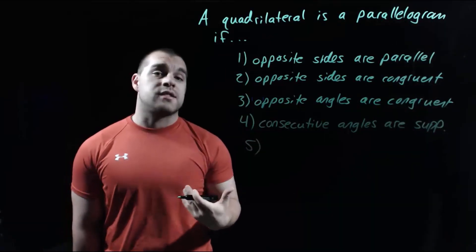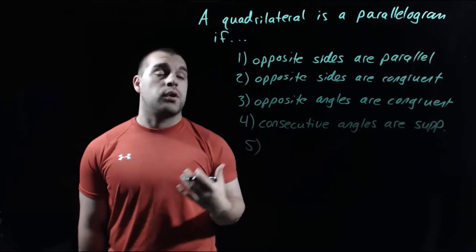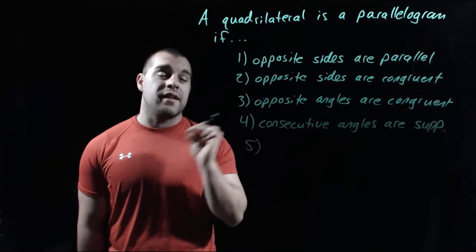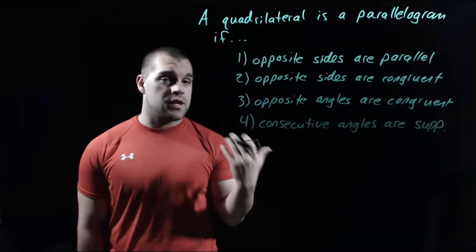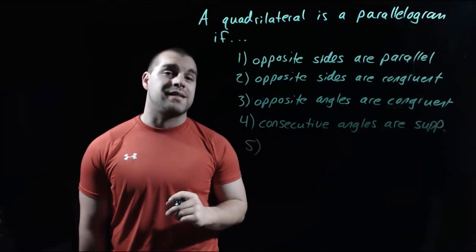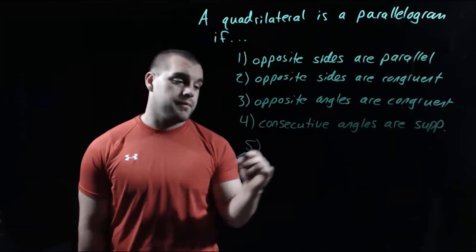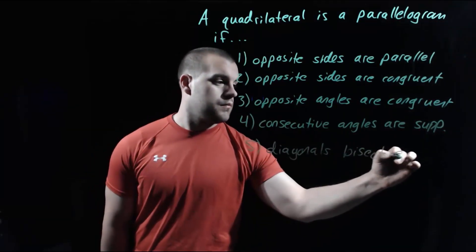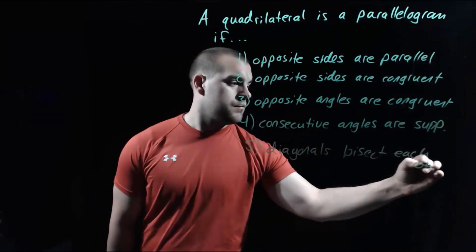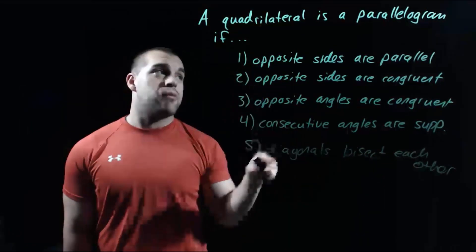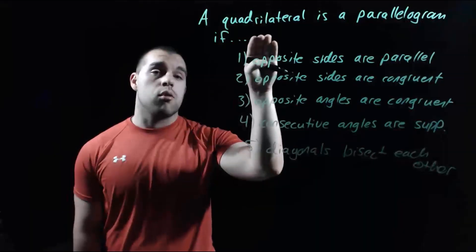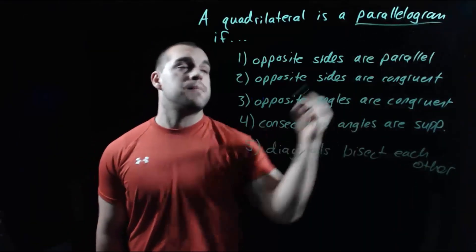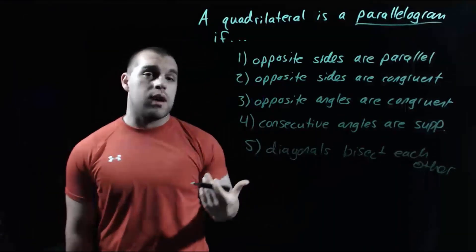Our last property that makes a quadrilateral be a parallelogram is that the diagonals, if we were to draw them in, have to bisect each other. So those five properties take a normal quadrilateral and turn it into one of these special parallelograms.